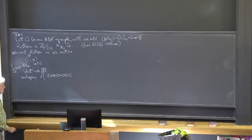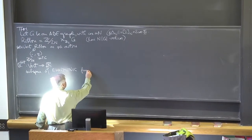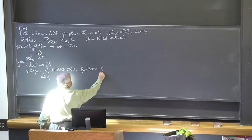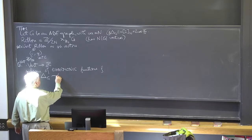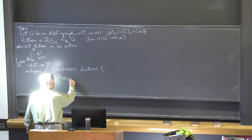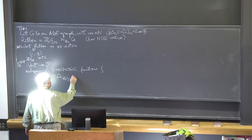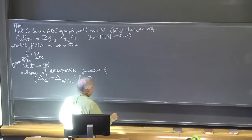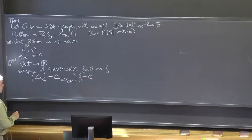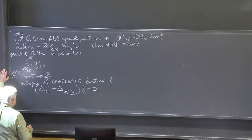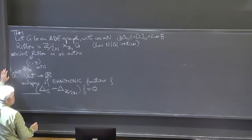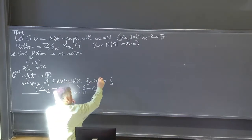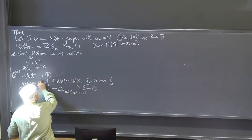The bi-harmonic functions are those for which delta_G — or minus delta on Z mod 2n — applied to f is zero. What we want to show today is that the subspace of bi-harmonic functions has specific properties.